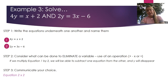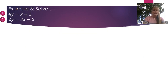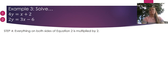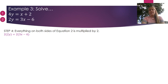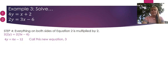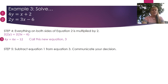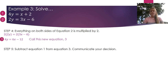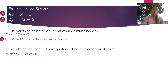I communicate my decision — equation 2 multiplied by 2. Everything on both sides of equation 2 is multiplied by 2, giving 4y = 2(3x - 6). Expanding: 4y = 6x - 12. I call this equation 3. Now I subtract equation 1 from equation 3 to eliminate y. Communicating: equation 3 minus equation 1. On the left: 4y - 4y = 0. On the right: (6x - 12) - (x + 2), and I put the second part in brackets.